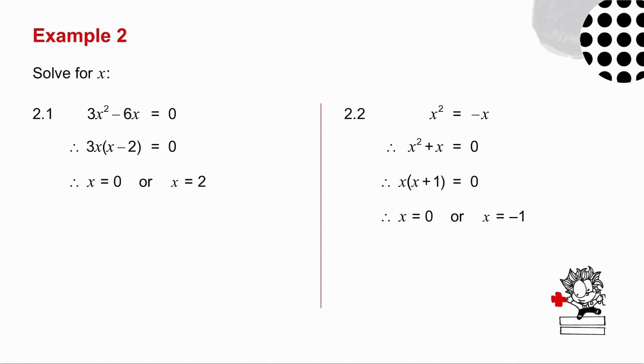In the first example, you take out a common factor of 3x, and you're left with a bracket x minus 2. So either 3x is 0, well 3 times what gives me 0, x must just be equal to 0, or x minus 2 must be 0, in other words x must be equal to 2.